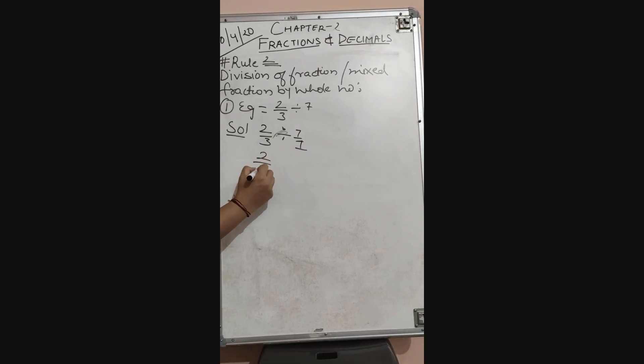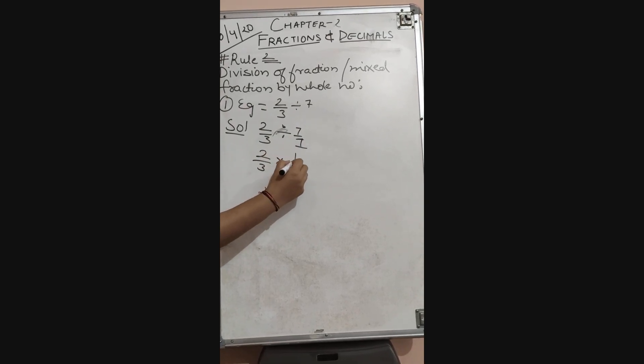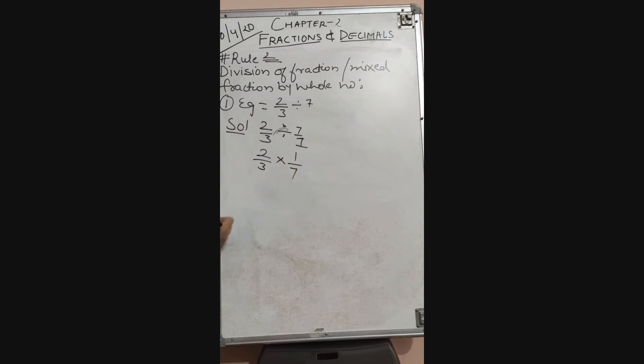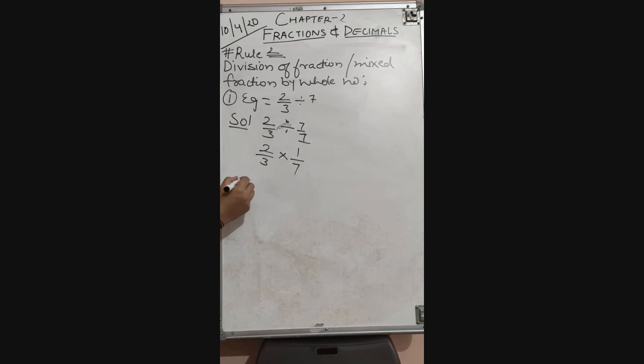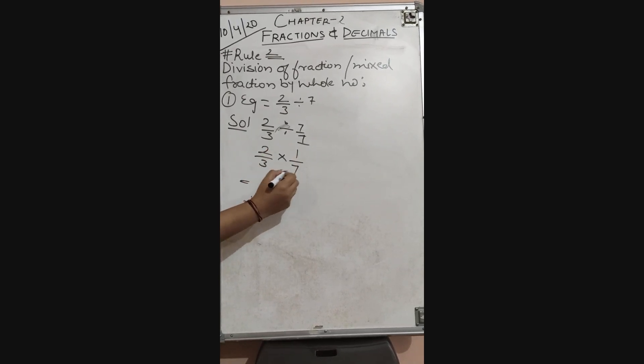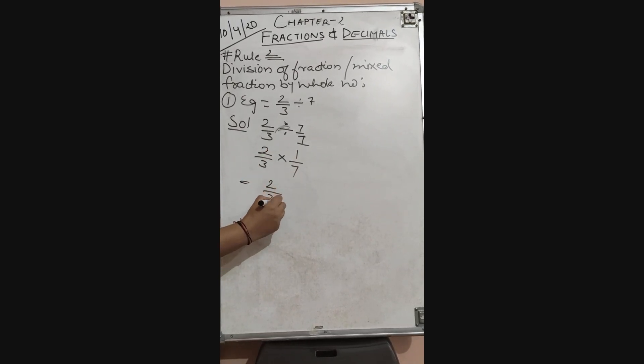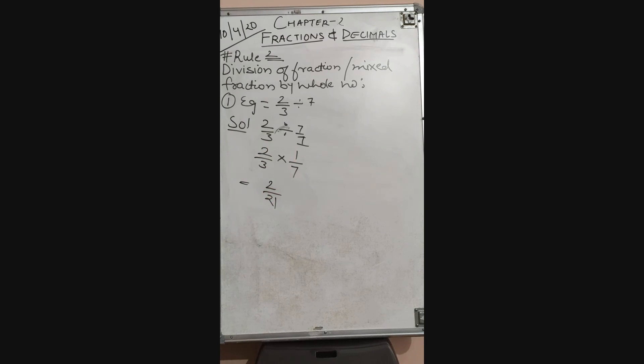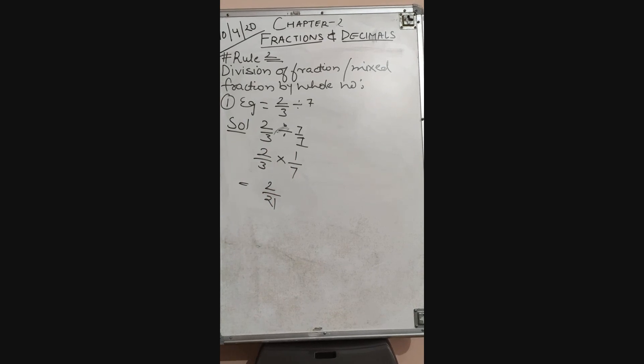Now reciprocal it — multiply by 1 upon 7. The answer: 2 ones are 2, and 3 sevens are 21. So the answer is 2 upon 21.